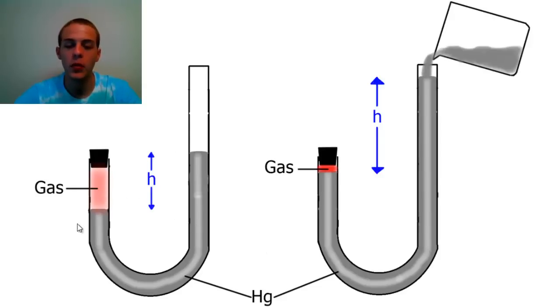And so what they did was they can measure the pressure of this gas because you have atmospheric pressure that's pushing down this way, and then you have the pressure of the gas that's pushing this way. And you can measure that pressure in millimeters of mercury simply by measuring the height between the two mercury levels.